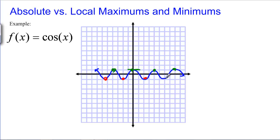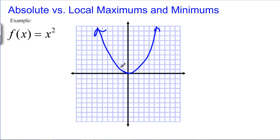Similarly, there's lots of local mins and that is also the value of the absolute min. For X squared, there is a local min and an absolute min at 0. There is no local maxes and no absolute maxes.